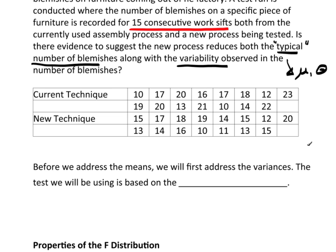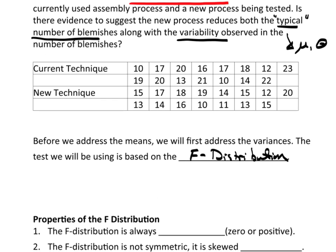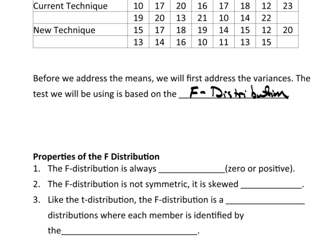So before we address the means, I'm going to first take a look at the variances. And the test we'll be using is based on the F distribution. Now, I'm going to initially approach this as if all I was interested in was the variability, just that. And then I'm going to come back and address the means. When you see what I have to do to address the means, that will probably make much more sense. So for now, we're going to pretend like all we're looking at is just the variability.